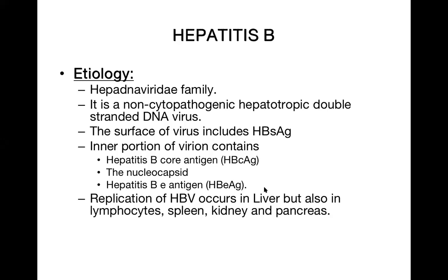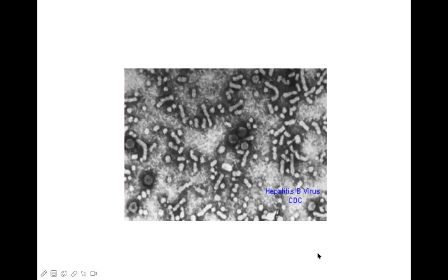Hepatitis B virus replication commonly occurs in the liver, but also in lymphocytes, spleen, kidney, and pancreas. This is why, unlike other hepatotropic viruses that mainly infect the liver, hepatitis B also affects other organs.